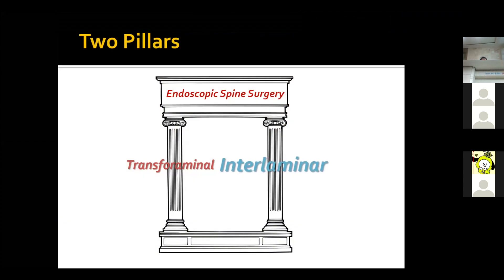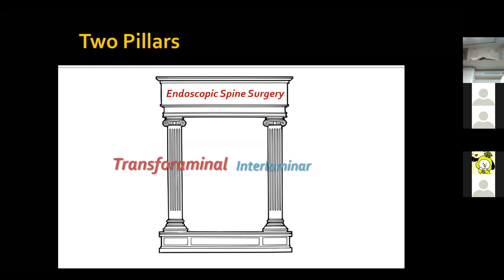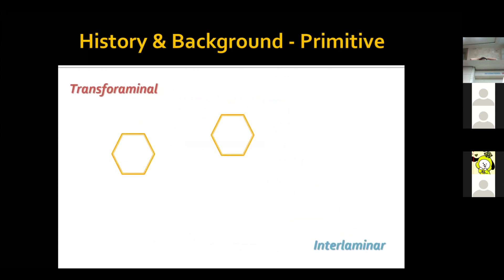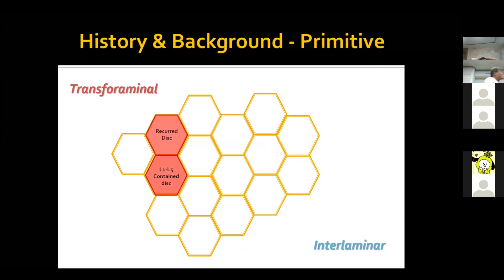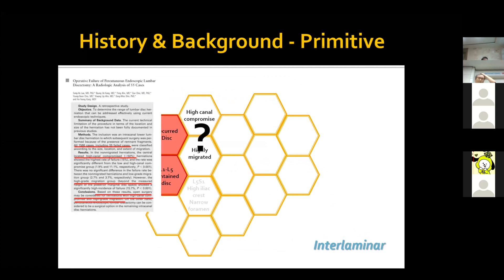Although nowadays we have several endoscopic approaches, endoscopic spine surgery originated from the transforaminal and interlaminal approaches — these two approaches are the two main pillars of traditional endoscopic spine surgery. The initial indication of the transforaminal approach was limited to simple contained disc, and complicated cases such as high canal compromise or highly migrated disc were contraindications.